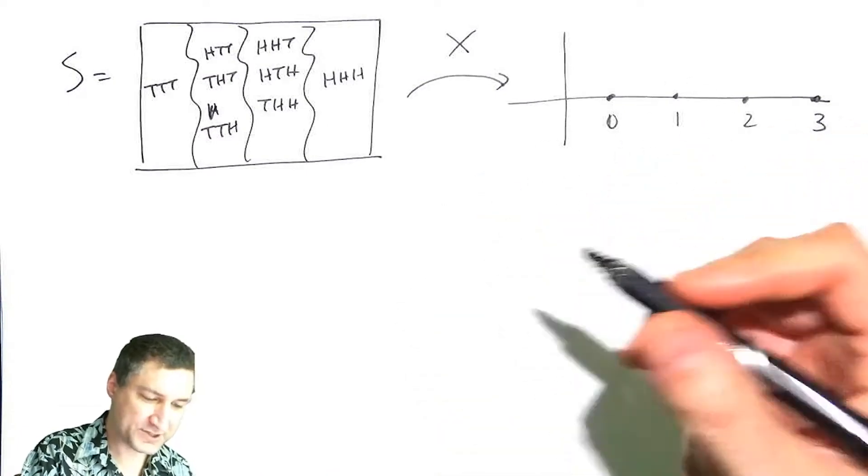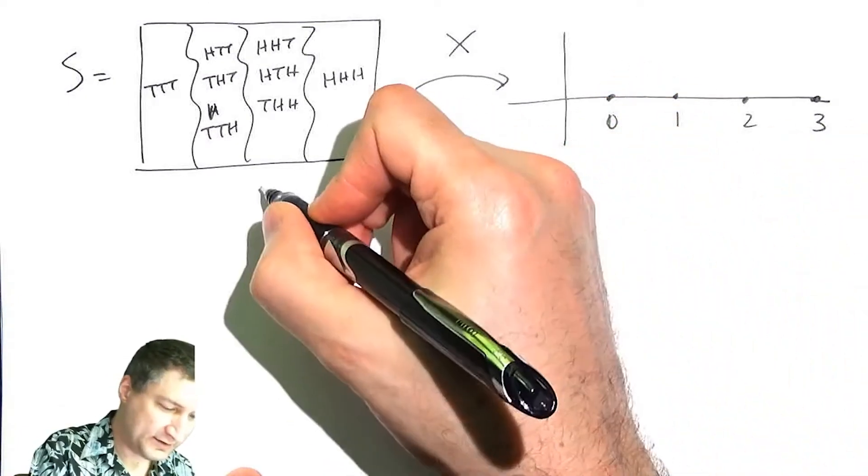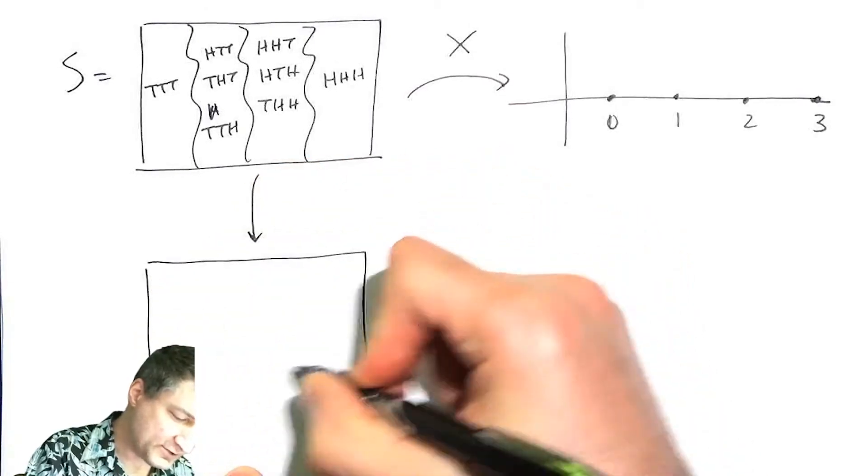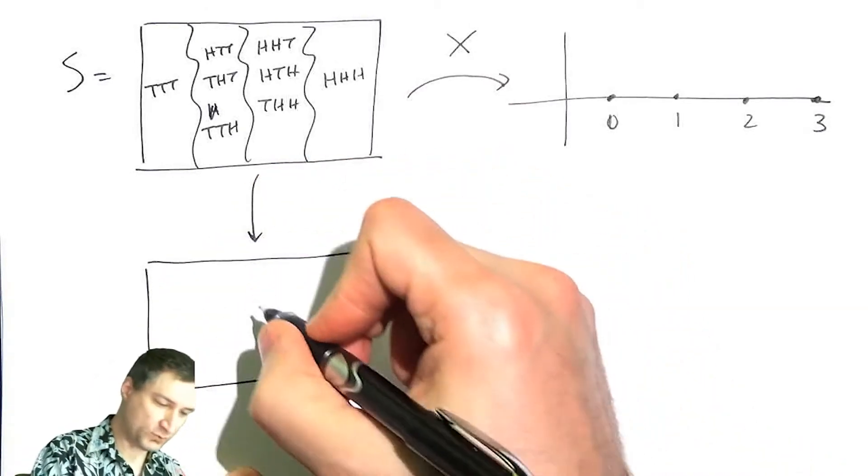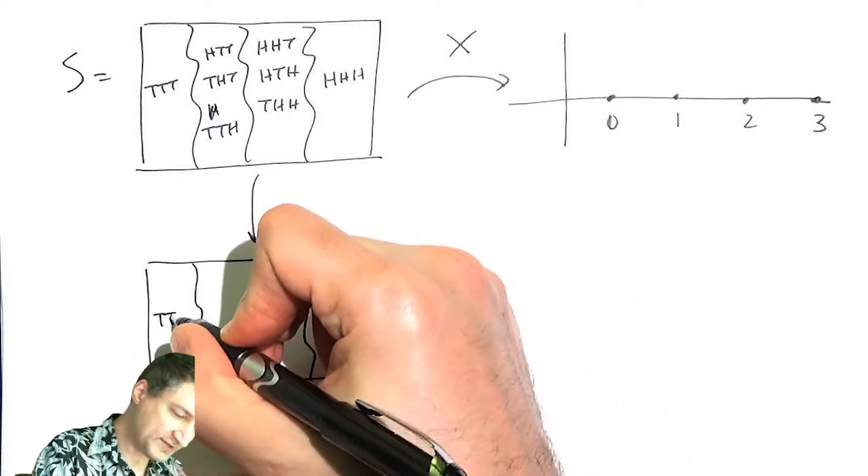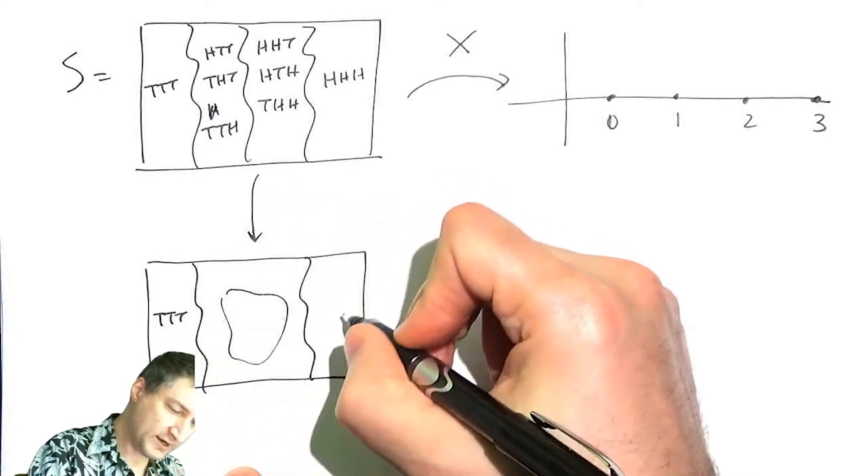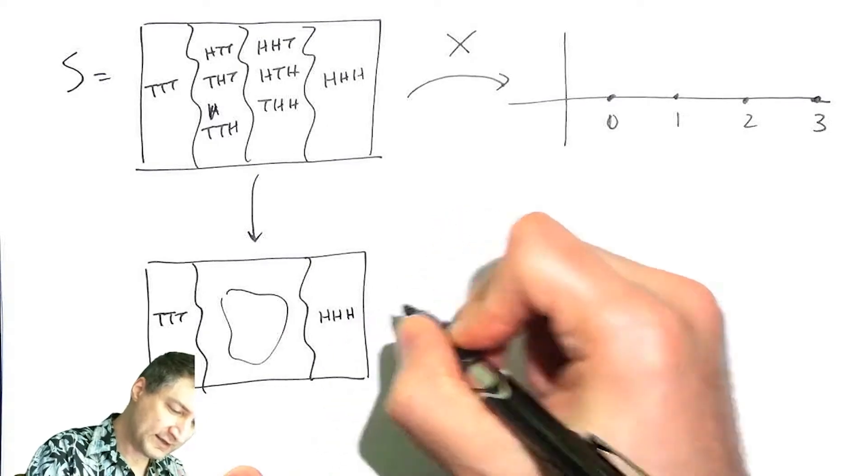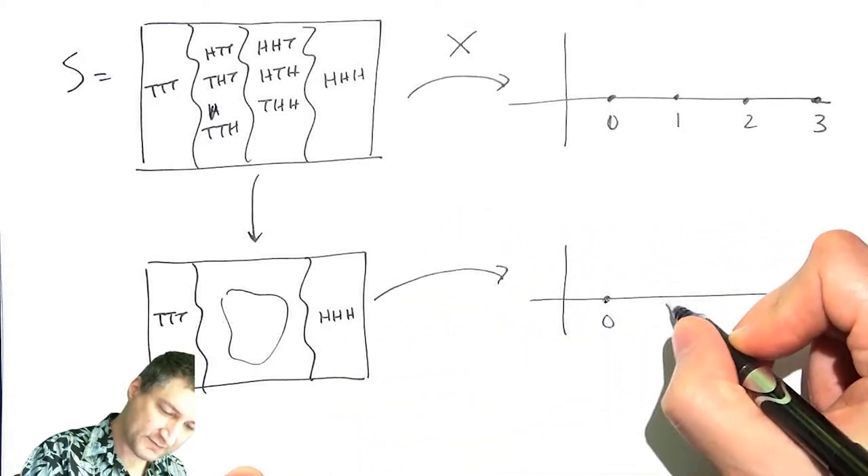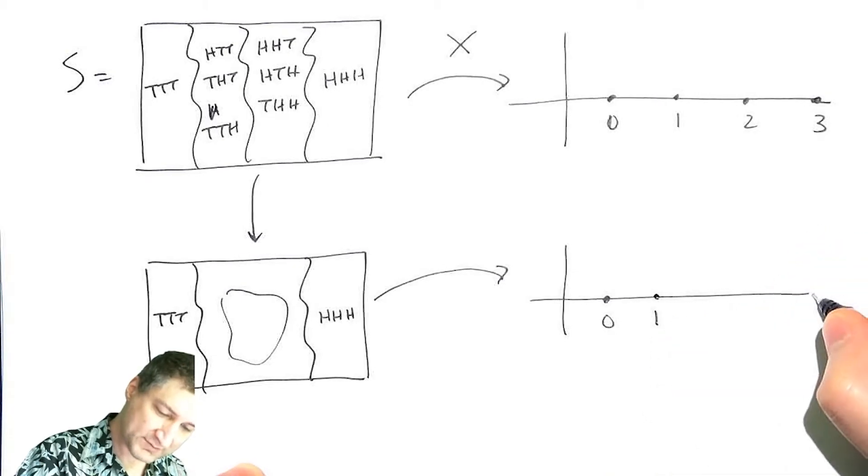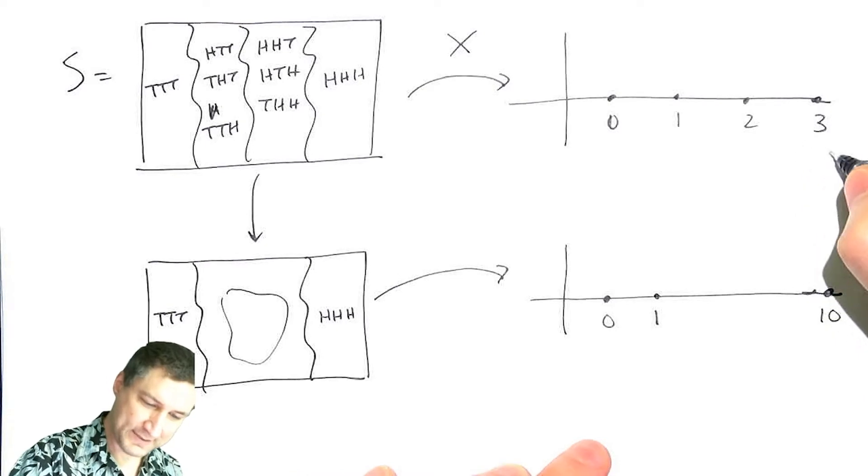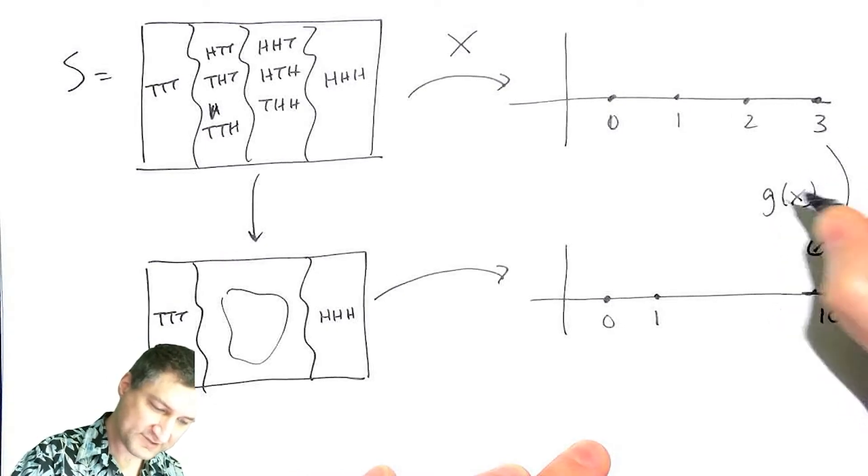Now I'm talking about a new experiment where I'm turning the sample space under the hood into a new sample space where there's only three classes. There's tail, tail, tail; there's all this other junk here; and then there's head, head, head. And this gets mapped to a new sample space for the random variable where the possible outcomes are 0, 1, and 10. And this is viewed as a transformation of g of x.